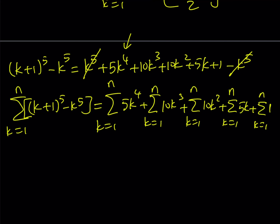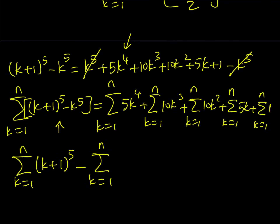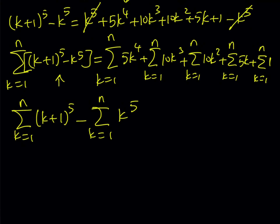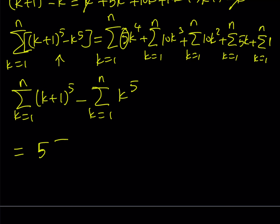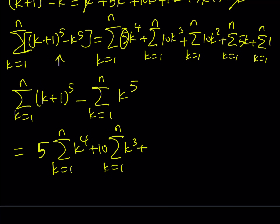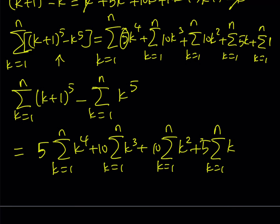At this point I'd like to separate these two expressions. On the right-hand side, factoring out the coefficients, I get 5 times the sum of k^4, plus 10 times the sum of the cubes, plus 10 times the sum of the squares, plus 5 times the sum 1 through n, plus n.